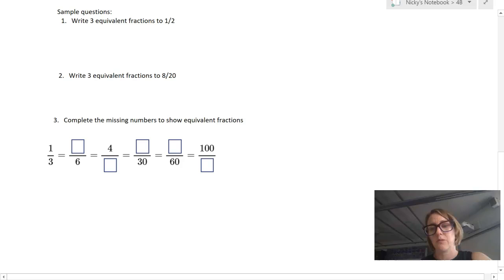So these are really typical questions that you might be asked to do in your textbook or in an exam. So the first one says, write three equivalent fractions to one half. So like I said before, you can always multiply the numerator and the denominator by the same number to find an equivalent fraction. That's a really good choice for this question. Now, there are many, many possible correct answers here.